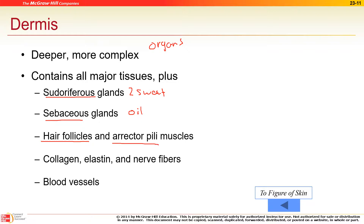The erector pili is the goosebump muscle. What type of muscle is it? There are only three choices: skeletal, smooth, or cardiac. It's smooth muscle, because you can't consciously make goosebumps — it's not under your control, so it's not skeletal, and it's not the heart, so it must be smooth muscle.